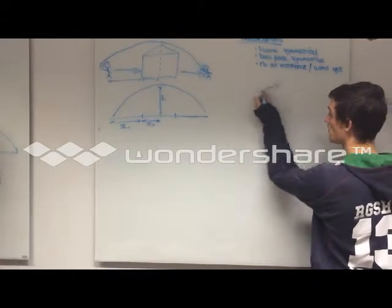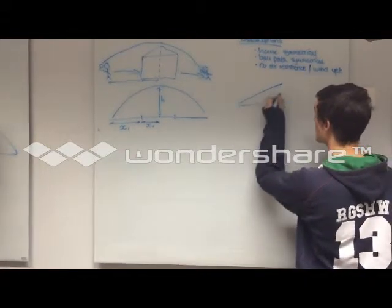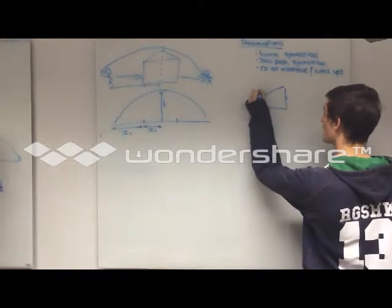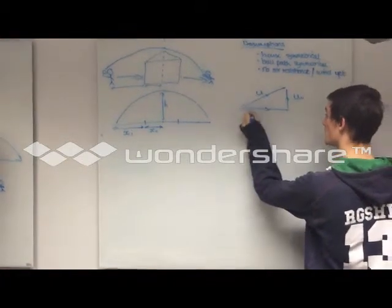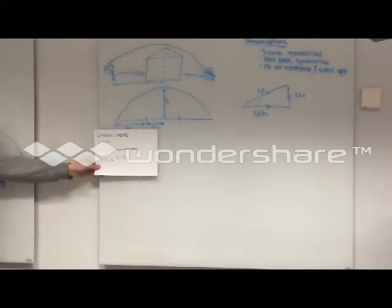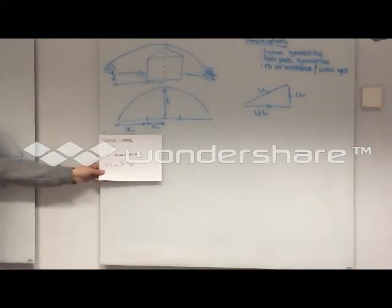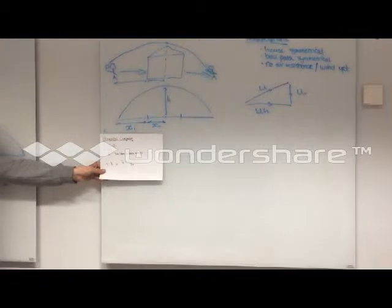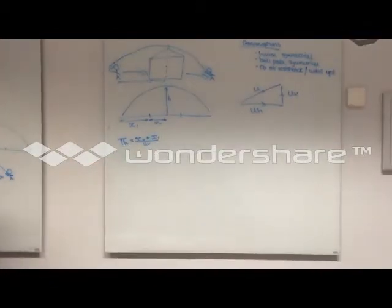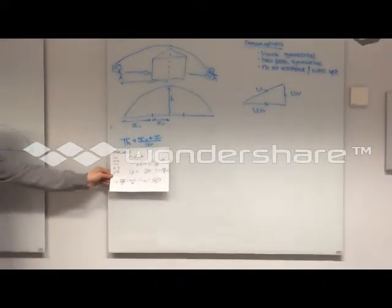If we take his initial throwing speed to be U, we can split horizontal and vertical components into UH and UV respectively. Looking at the horizontal component, we get a value for time taken for the ball to reach the midpoint. Using this, and looking at the vertical component, we get values for UV and UH.